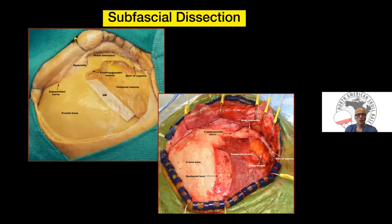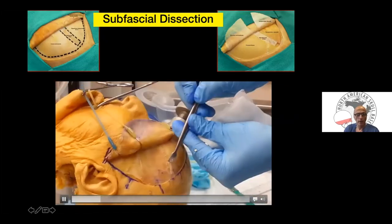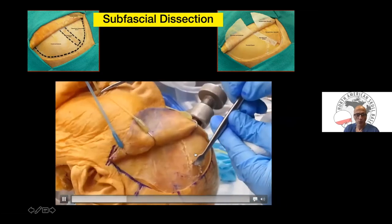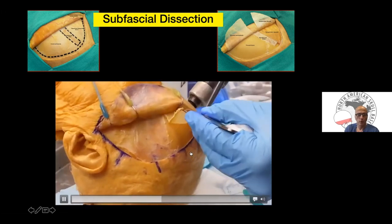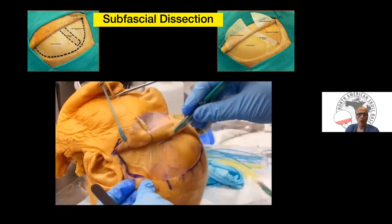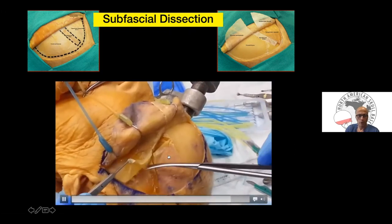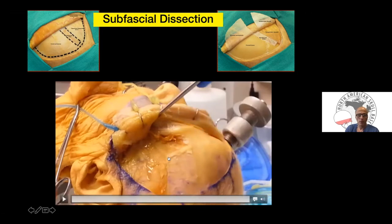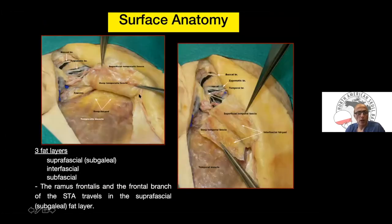We then carry on with subfacial dissection to elevate the temporalis muscle and temporalis fascia. This can be done in the interfacial or subfacial fashion; I prefer the subfacial approach. First, we elevate the pericranium, which can be used as a free or pedicle flap to reconstruct the anterior cranial fossa, or to reconstruct the frontal sinus if it is opened. We leave a muscle cuff along the superior temporal line and elevate the temporalis fascia in a subfacial fashion all the way to the zygoma and superorbital bar. The anatomical dissections from our lab demonstrate the facial nerve branches traveling in the subgaleal fat layer — we stay below the deep layer of the temporalis fascia.